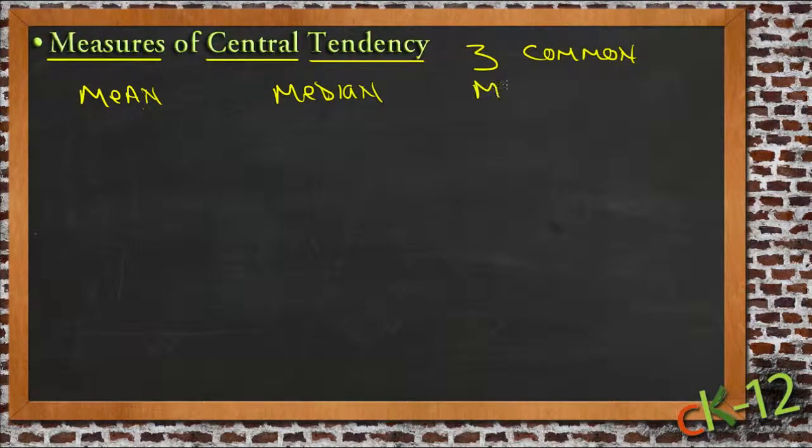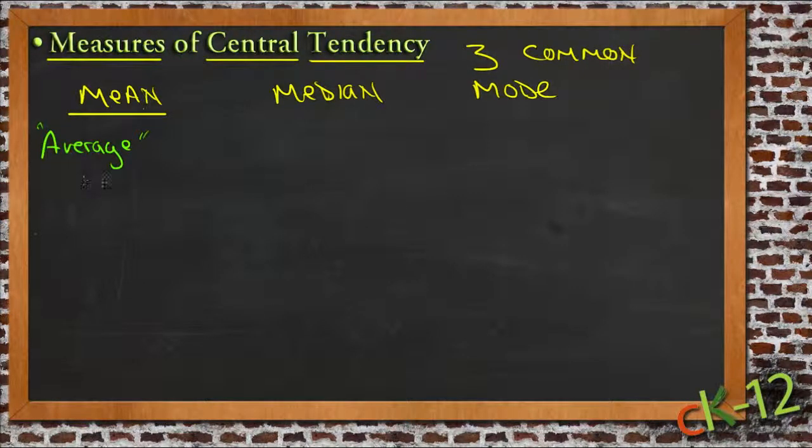The mean is the most common measure. It's usually referred to as the average—that's the common everyday term for it. From a mathematical standpoint, it's technically called the mean. To calculate the average of something, you take the total value of the things that you're calculating.